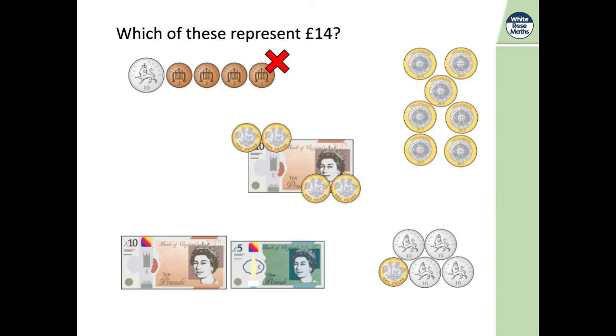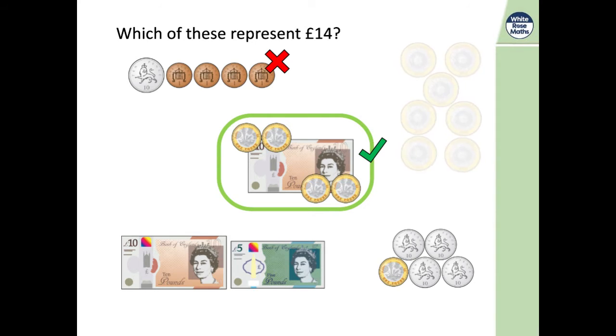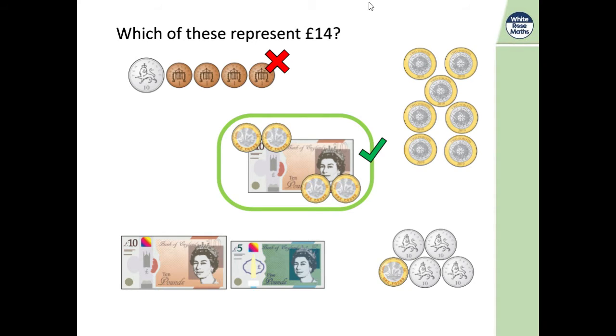This one in the middle, I've got a 10 pound note and four one pound coins. So that one does make 14. This one over here, we're going to count in twos because they are two pound coins. So two, four, six, eight, 10, 12, 14. So that one does give me 14 pounds.